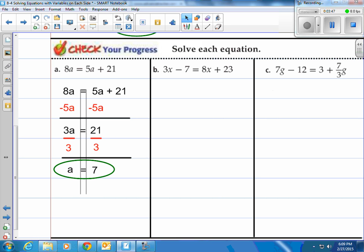How about b? We have 3x minus 7 equals 8x plus 23. Well, let's rewrite our problem. Make sure we have some train tracks here. And now, what's our step?